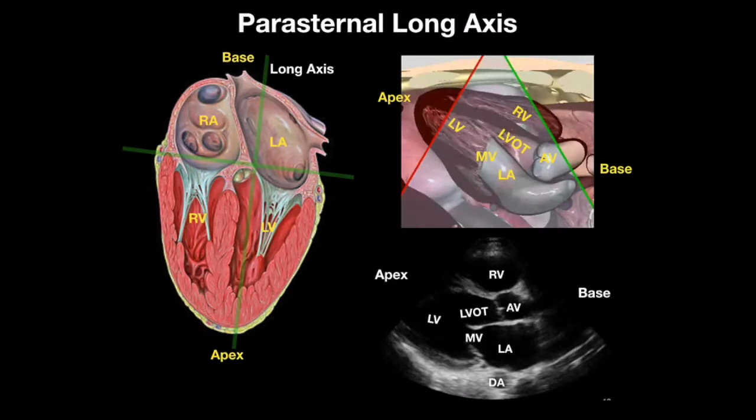Most people think that the apical windows are the best — you can put color on them and it definitely looks pretty. But it's actually the parasternal long axis that is key. Just like that mythical briefcase that ties Pulp Fiction together, the parasternal long axis is not only beautiful, but it's fundamental to a great Echo.